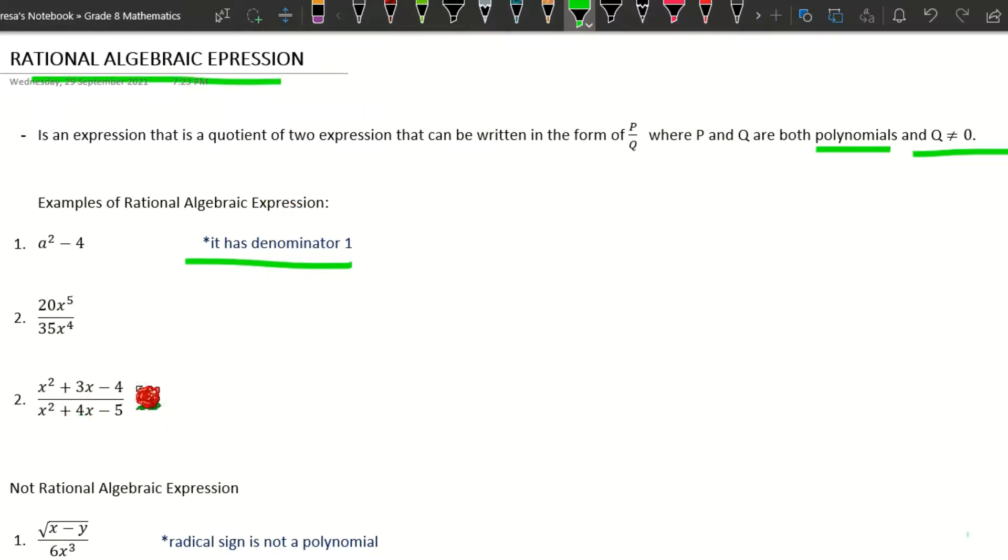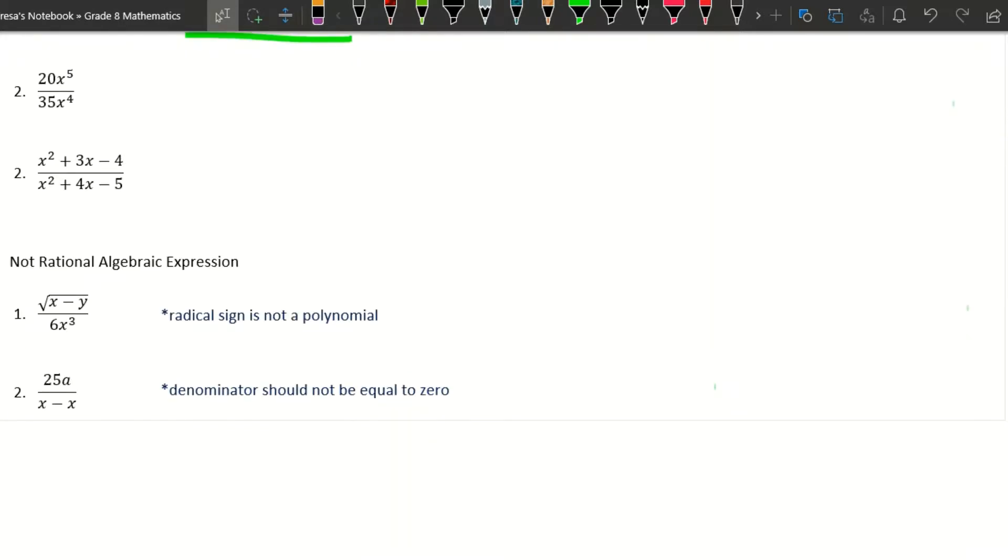Okay, so we also have examples here of not rational algebraic expressions. First, we have √(x - y)/(6x³). So why is it not an example of a rational algebraic expression? It is because the square root is not a polynomial.